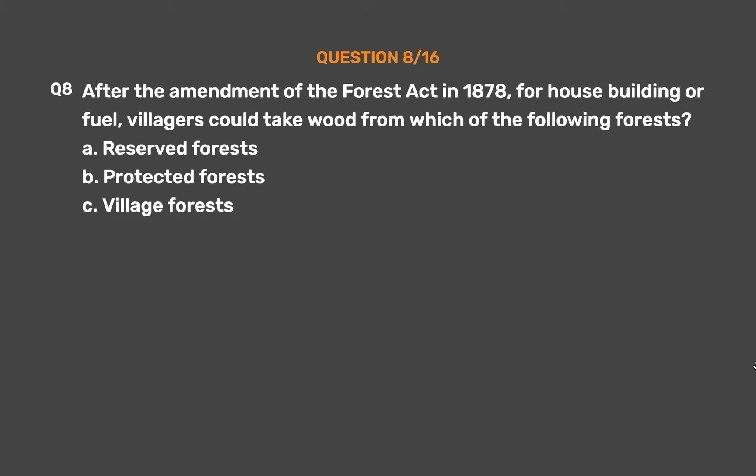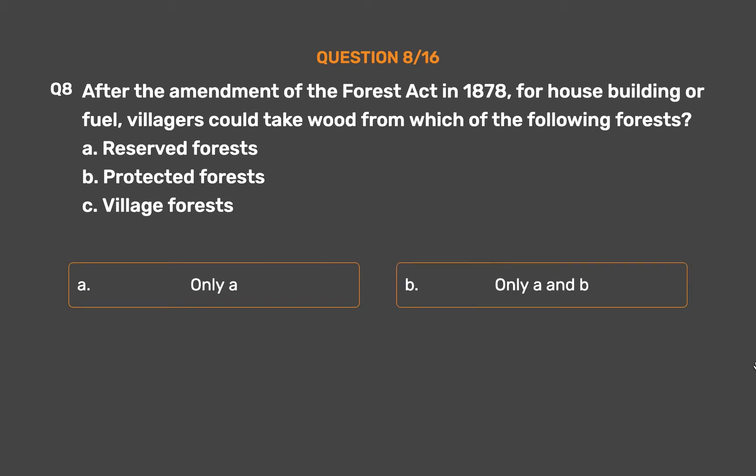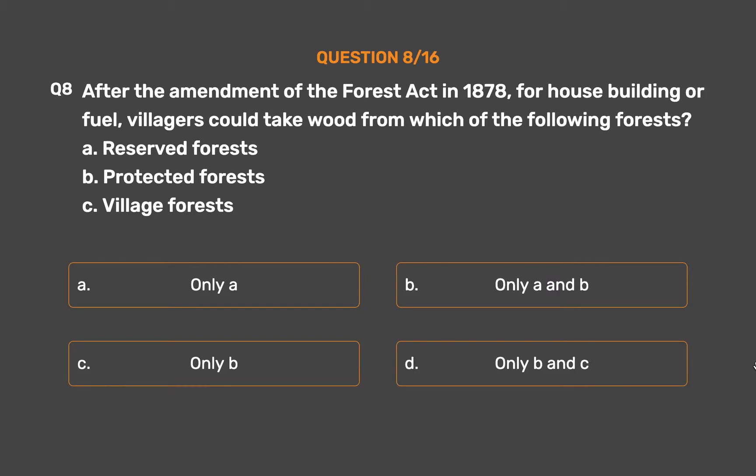Question 8: After the amendment of the Forest Act in 1878, for house building or fuel, villagers could take wood from which of the following forests? A: Reserved forests. B: Protected forests. C: Village forests. Option A: Only A. Option B: Only A and B. Option C: Only B. Option D: Only B and C.